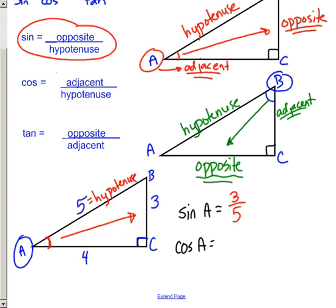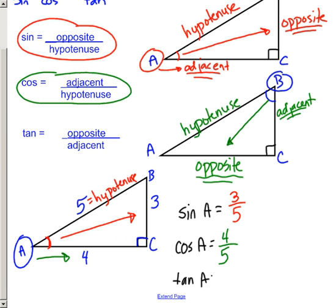For the cosine of angle A, we need adjacent over hypotenuse. The side adjacent to A is 4, over the hypotenuse of 5, so cosine of A equals 4 over 5. For the tangent — the last of these three functions — the tangent of angle A is opposite over adjacent, which is 3 over 4.